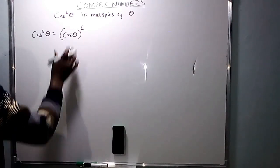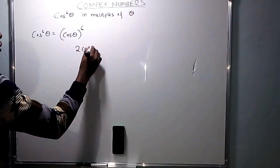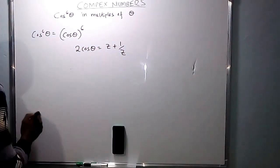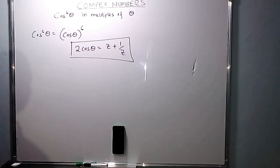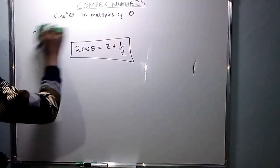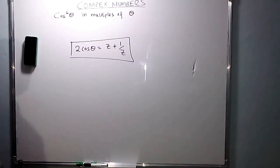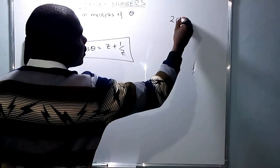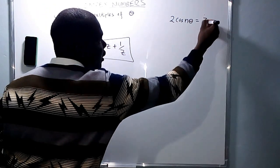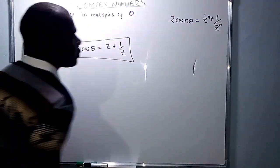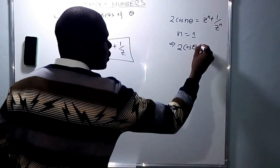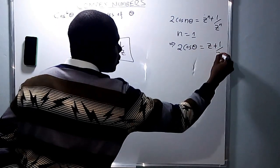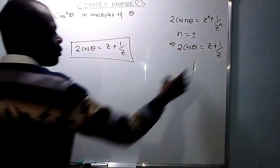We found out that twice cos theta is just z plus 1 over z. So twice cos theta is z plus 1 over z. We derive this from the fact that 2 cos(nθ) equals zⁿ plus 1 over zⁿ. So when n is 1, 2 cos theta equals z plus 1 over z.